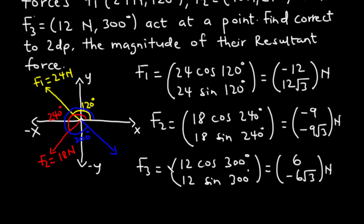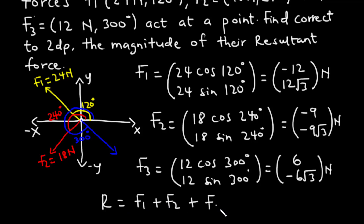These are the column vector forms of the individual forces F1, F2, and F3. The resultant force R equals F1 plus F2 plus F3, so we are going to sum these forces up.